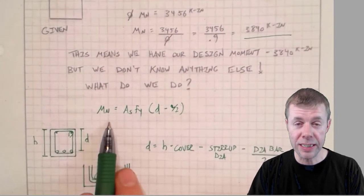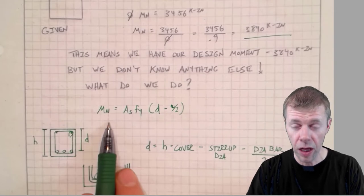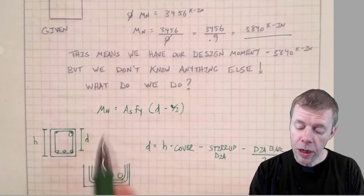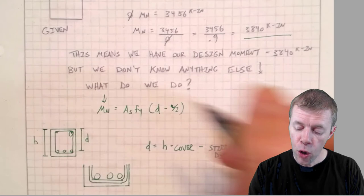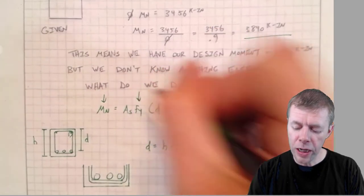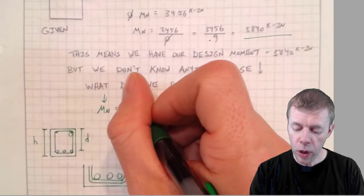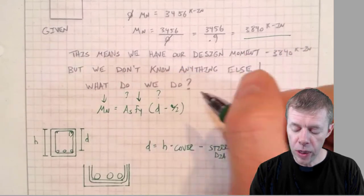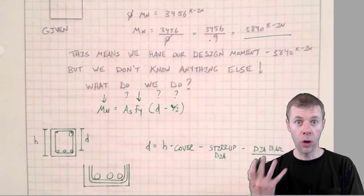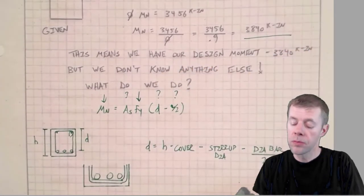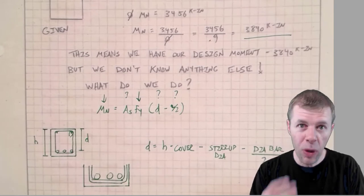We know our cross-section but we don't know anything else. Going back to this magical equation that dictates the flexural strength of concrete, we know the moment, we know Fy, but we don't know D and we don't know a.